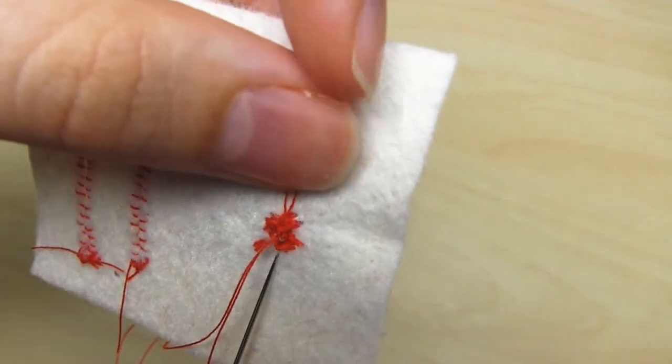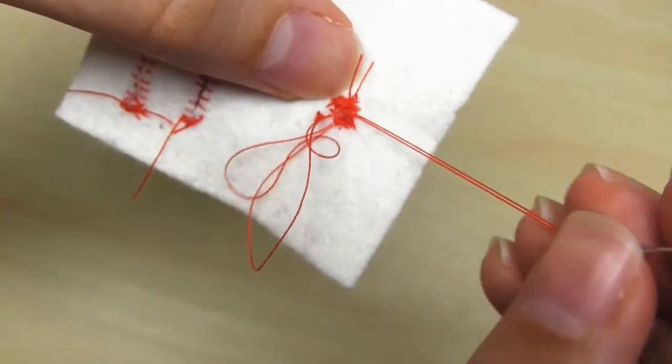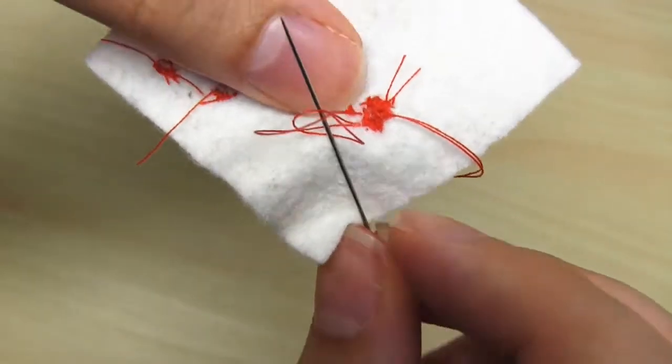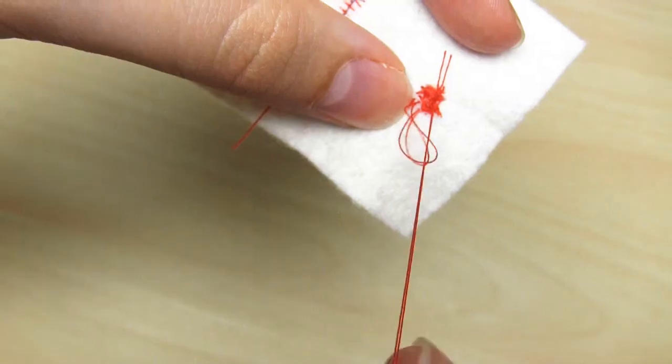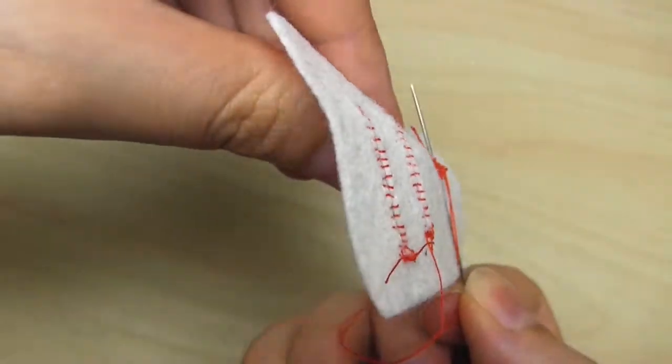So take your needle under some of the threads on the back of the fabric. Pull the thread until there's just a small loop remaining. Take the needle through that loop, and tighten. You can then repeat that again if you wish.